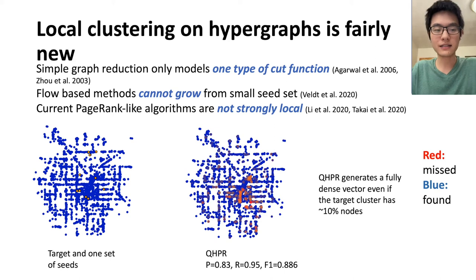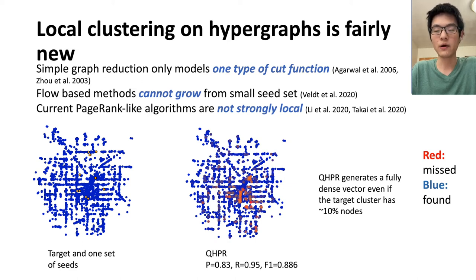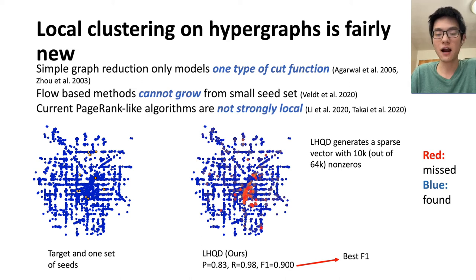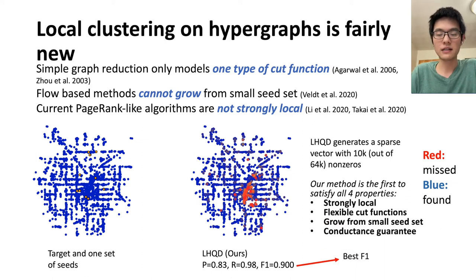There is another set of algorithms that defines a vector on the hypergraph. As you can see from the results, this kind of method works very well in terms of accuracy. However, it is not strongly local, which means each time it generates a fully dense vector even if the target cluster has only around 10% of nodes. Finally, this is the result from our new method. Our new method gives the best F1 score, and more importantly, it does so by only visiting around 10% of the entire graph. In short, our method is the first algorithm that satisfies all four properties: it is strongly local, it models flexible cut functions, it can grow from a small seed set, and it gives a conductance guarantee on the results.